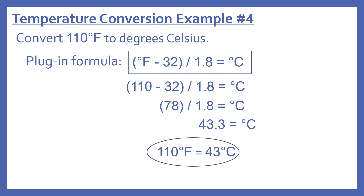Example number four: convert 110 degrees Fahrenheit to degrees Celsius. With the plug-in formula, degrees Fahrenheit minus 32 in parentheses divided by 1.8 gives degrees Celsius. Plugging in our Fahrenheit number: 110 minus 32 equals 78.